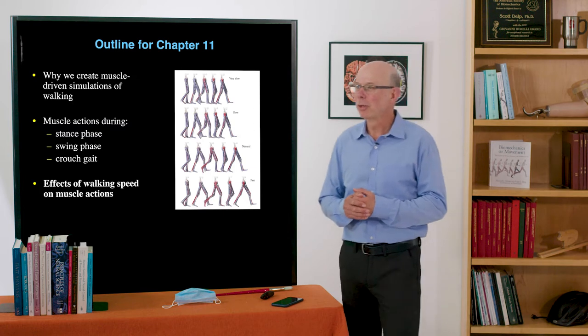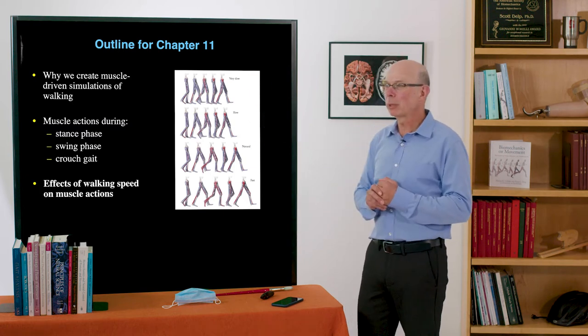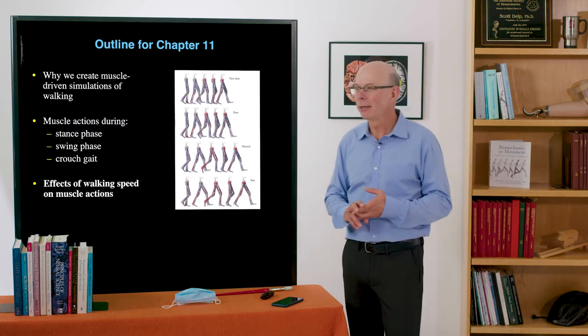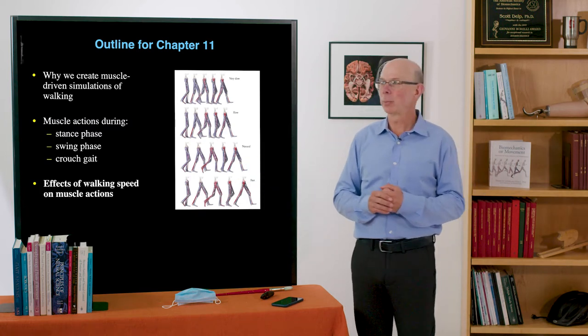Last section for chapter 11. We've talked about why we build simulations, muscle actions during stance, swing and crouch gait. Now we want to talk about the effects of walking speed.